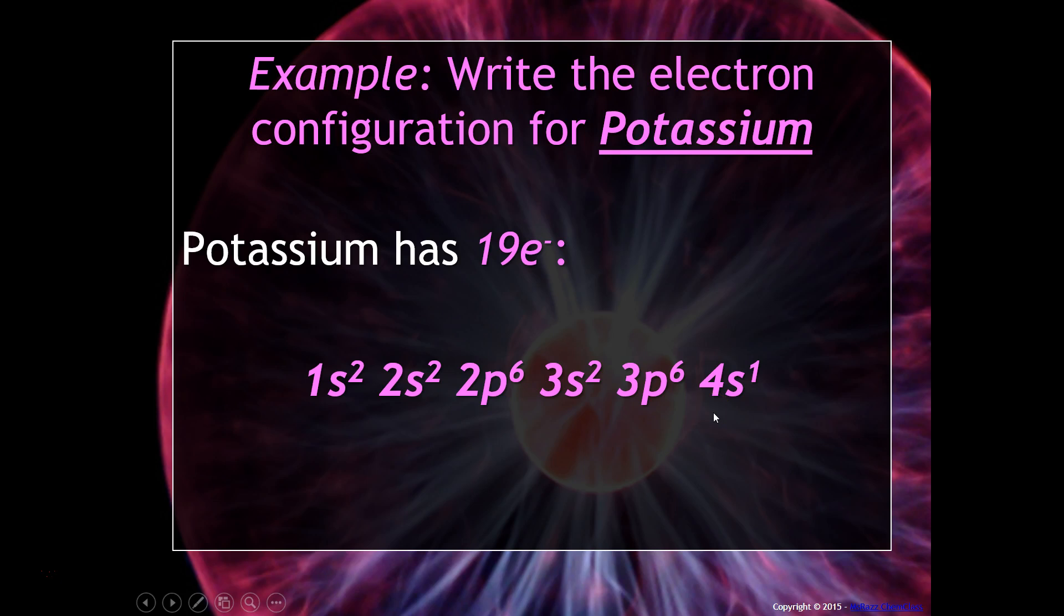You may think that you're going to 3d. Well, in fact, that is not the case, because 4s is a little bit lower in energy than 3d. And so that's why this would be the appropriate electron configuration for potassium.